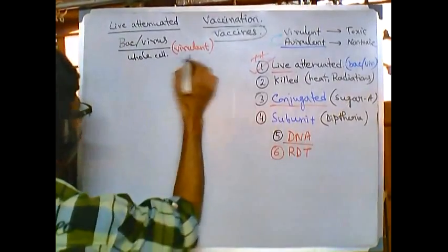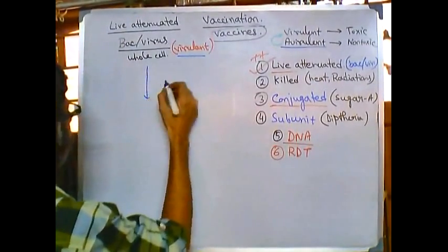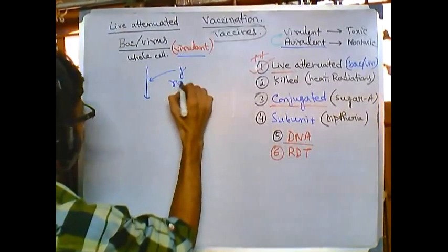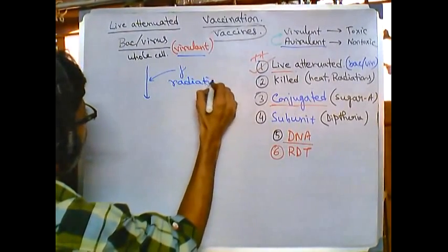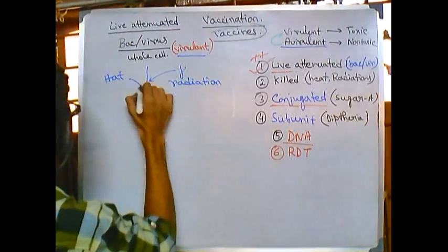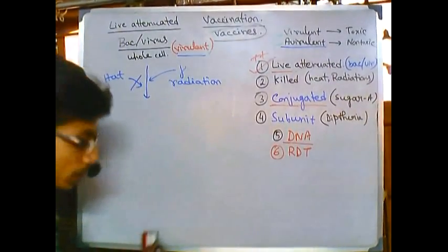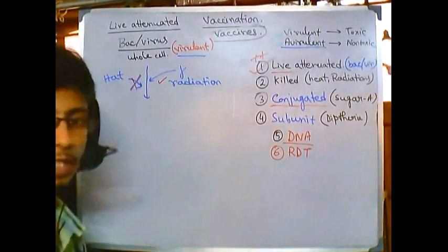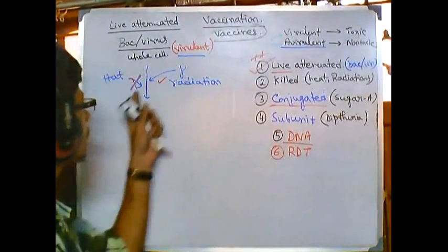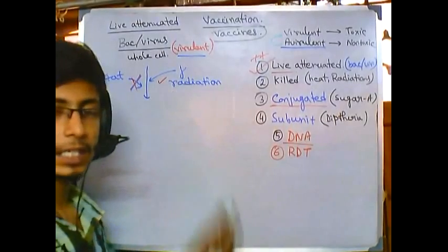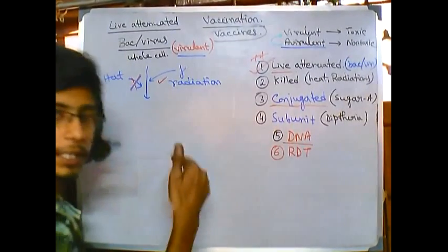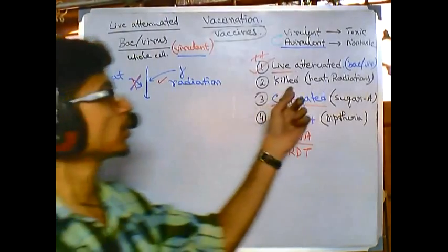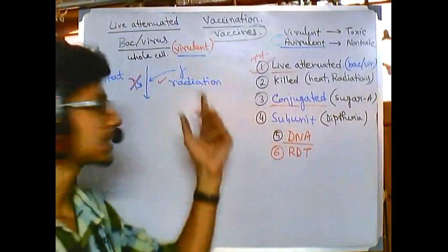They are virulent in this particular phase, so we will add gamma radiation. In past times, heat was used but nowadays it is not used. Instead of heat, we use gamma radiation because radiation is very important to kill. Radiation can change the DNA sequence and can penetrate the cell and change the sequence, mutating it so that it can no longer be viable or virulent.